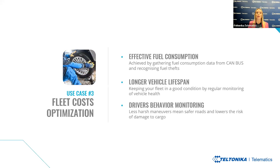The third use case is fleet cost optimization, a crucial aspect of effective fleet management. Using telematics technology, businesses can implement strategies to optimize costs and enhance operational efficiency. Our system collects precise fuel consumption data through CAN bus analysis, allowing us to identify instances of fuel theft effectively. By addressing fuel theft, the FMX 150 helps optimize fuel usage, reducing costs and increasing efficiency. We also implement continuous monitoring of vehicle health, with real-time diagnostics ensuring vehicles are in optimal condition, leading to longer lifespans and minimized unexpected breakdowns.